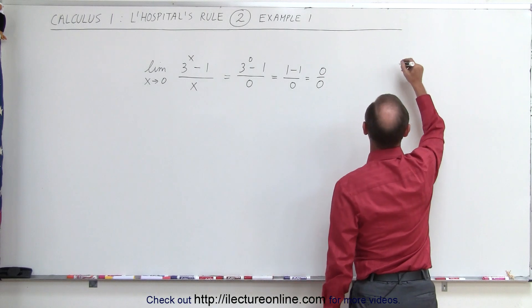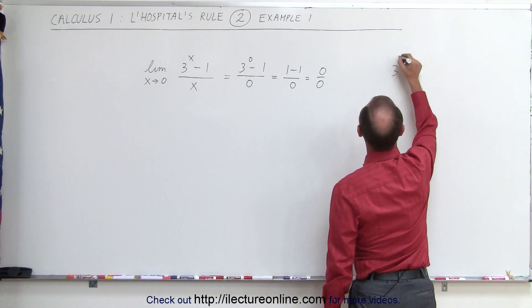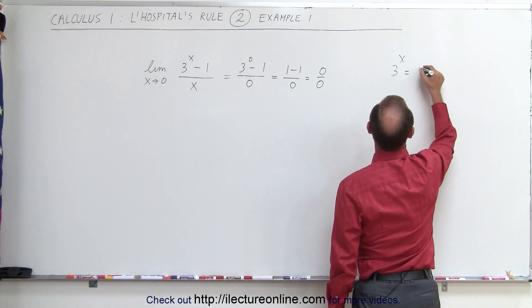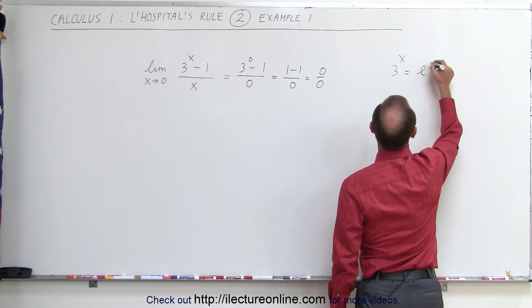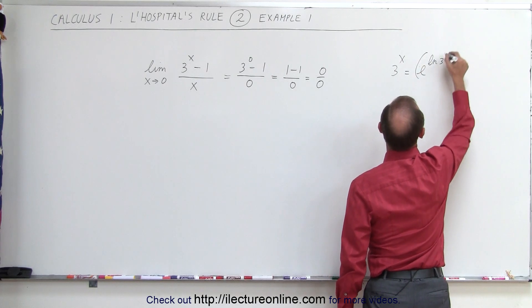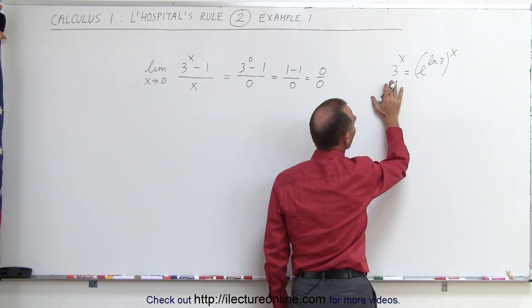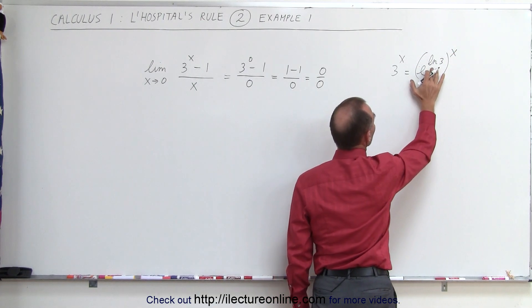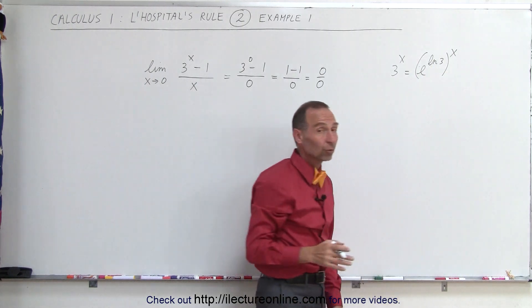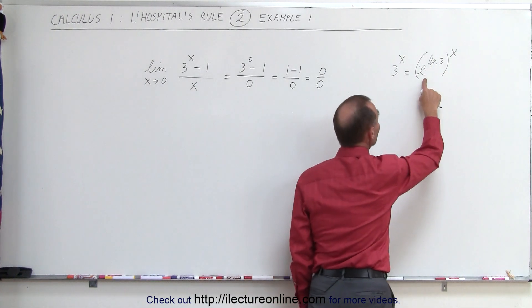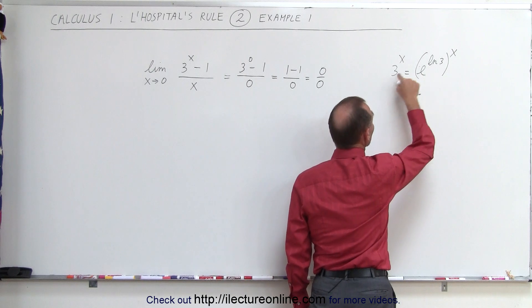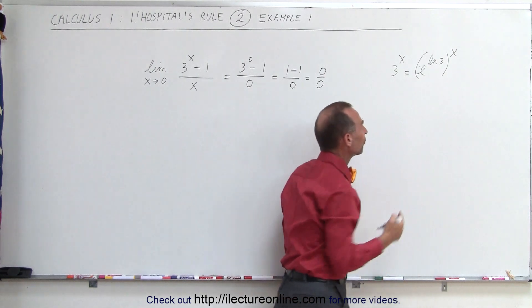Our little trick is this: 3 to the x power can be written as e raised to the natural log of 3 raised to the x power. We've replaced the number 3 by writing it as e to the natural log of 3. Can we do that? Sure we can, because e raised to the natural log of 3 just gives us 3 back.